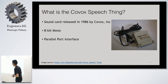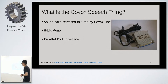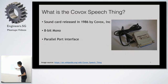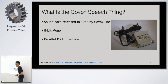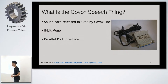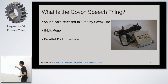So what is the Covox Speech Thing? This sound card was released in 1986 and it's only 8-bit mono. You can see from the audio connector here there are only two connections. For a stereo audio connector there are three points, but this one has only two, which means it's a mono connection.